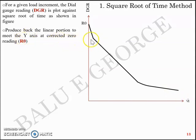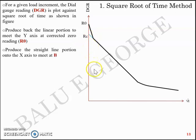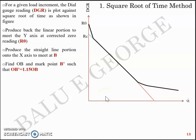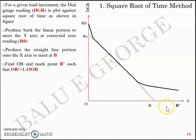Produce back the linear portion of the graph obtained by plotting DGR versus √t to meet the y-axis at a corrected zero R₀. Extend the initial linear portion to meet the y-axis at the corrected zero. Then produce a straight line portion onto the x-axis to meet at point B. Find OB — the distance from the origin to B — and mark a point B′ such that OB′ = 1.15 × OB.